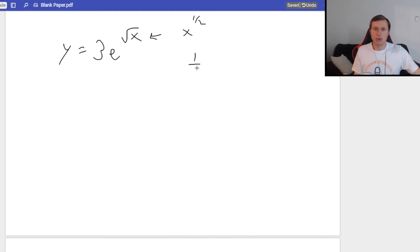That would be a power rule. 1 half times x to the, what's 1 half minus 1? Negative 1 half, so it's 1 half x to the negative 1 half power. That goes in front of everything, along with that 3 there, since the 3 is just a coefficient. So it's going to be 3 times 1 half x to the negative 1 half power, and then times my original function e to the square root of x.